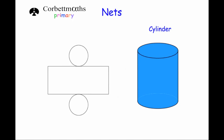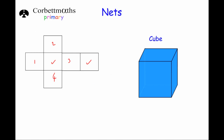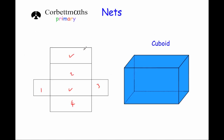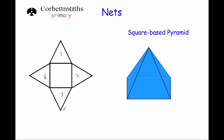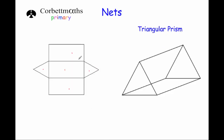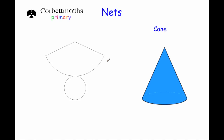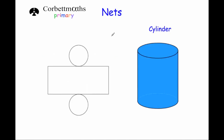So these are some common nets which are useful to learn: the net of the cube, the net of the cuboid, the net of the square-base pyramid, the net of the triangular prism, the net of the cone, and the net of the cylinder. These are just some common nets which would be very useful to recognize and to learn.